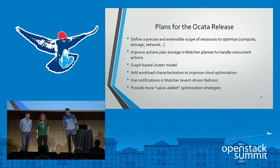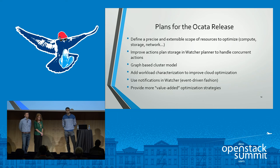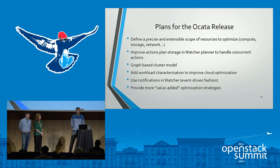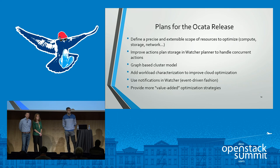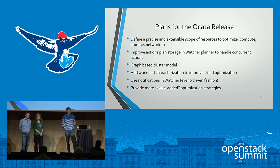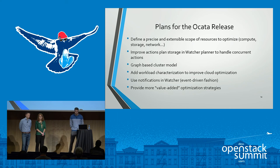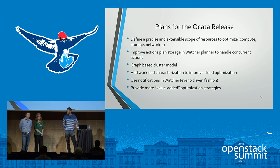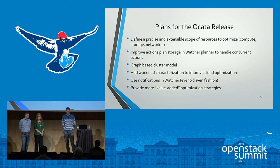What are the plans for the Okata release? First, we want to work on audit scope. Right now when we perform an audit, it's done on the whole infrastructure. Sometimes, depending on what you want to optimize, it's better to scope the optimization to something specific — for example, an availability zone, a specific node group, storage, or network. The idea behind audit scope is to be able to scope the audit to specific resources available in OpenStack.